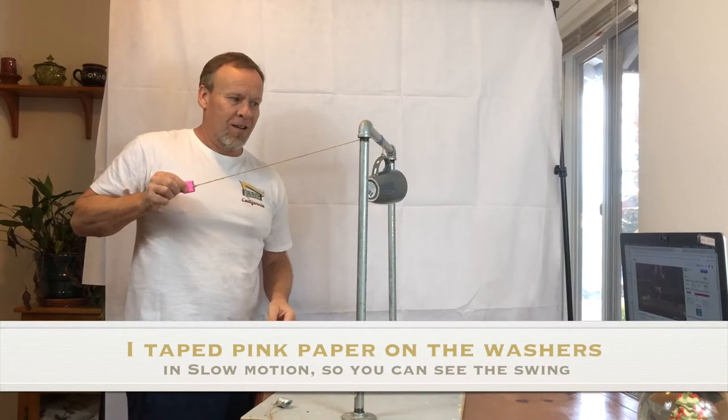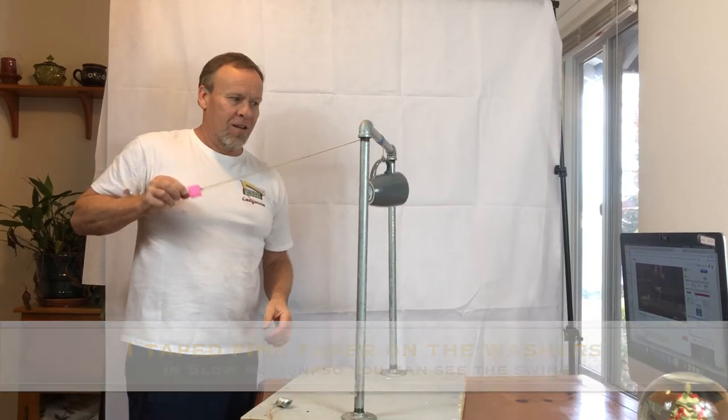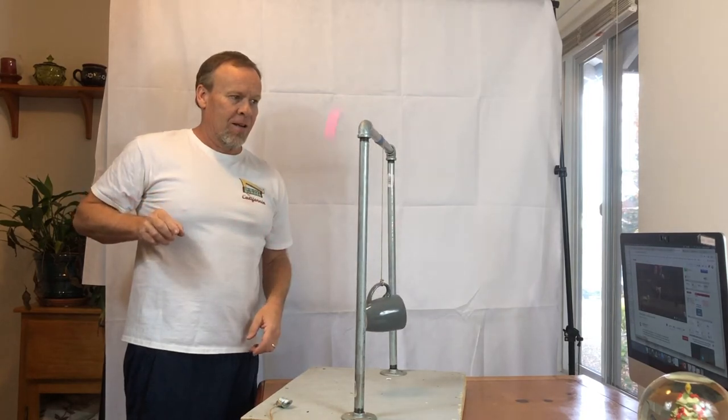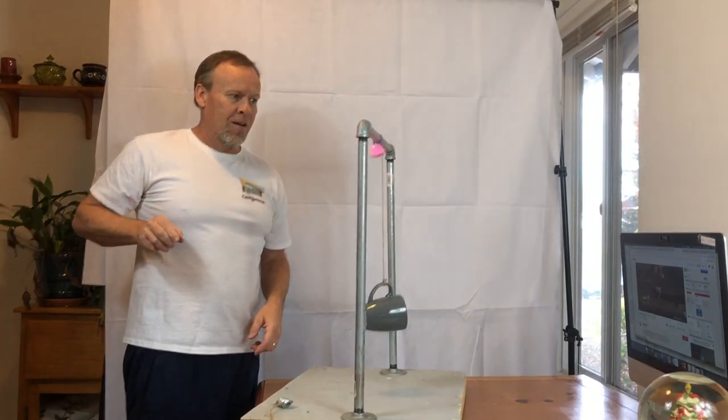So I placed the piece of pink paper on the washer so you can see the washers swing in slow motion and you can see how the rotational energy picks up and then the friction brings the coffee cup to a halt.